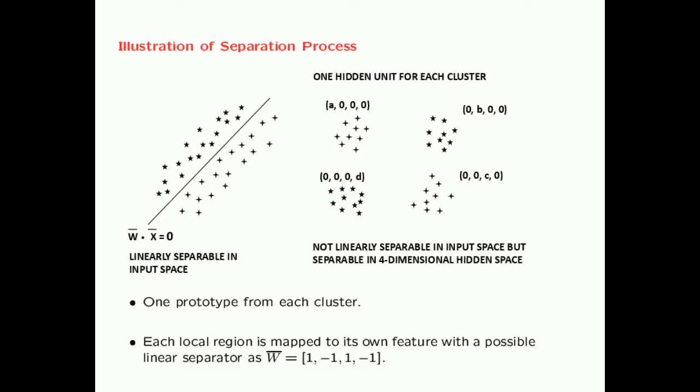Consider two classes: the distribution on the left is linearly separable and could be classified with a simple perceptron. But the distribution on the right is not linearly separable — the class of pluses and the class of stars are interleaved so you can't draw a line to separate them. In an RBF network with just four hidden units, if we assume the centroid of each cluster is the prototype vector, and the bandwidth sigma is chosen so that activation is strongly positive only for the hidden unit corresponding to the point's cluster and nearly zero for others, then each point maps to a four-dimensional hidden representation.